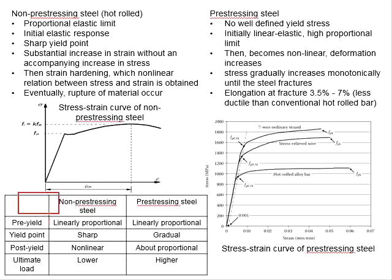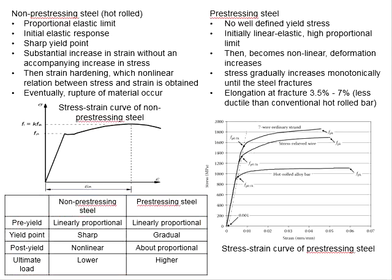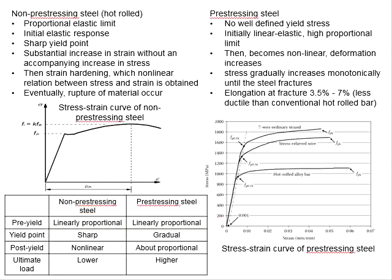This table summarizes the differences between non-prestressing and prestressing steel. They behave similarly before yielding — both are elastic, and the development of stress over strain is linearly proportional. However, the yield point for non-prestressing steel is easily defined due to the sharp turning point, whereas for prestressing steel the yield point is difficult to define, as the turning point is gradual.